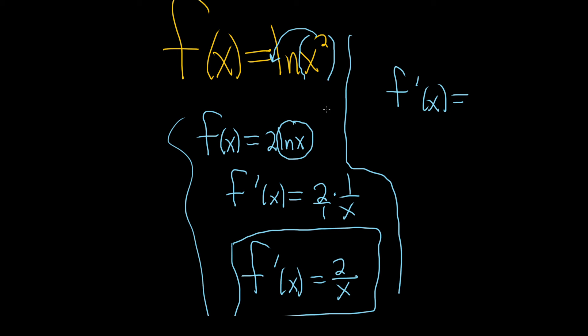So the derivative of the natural log of x is 1 over x. Here's the natural log of x squared, so it's 1 over x squared, and then times the derivative of the inside. That's the chain rule. So the derivative of x squared is 2x. And then what happens is you lose an x and so you just get 2 over x.